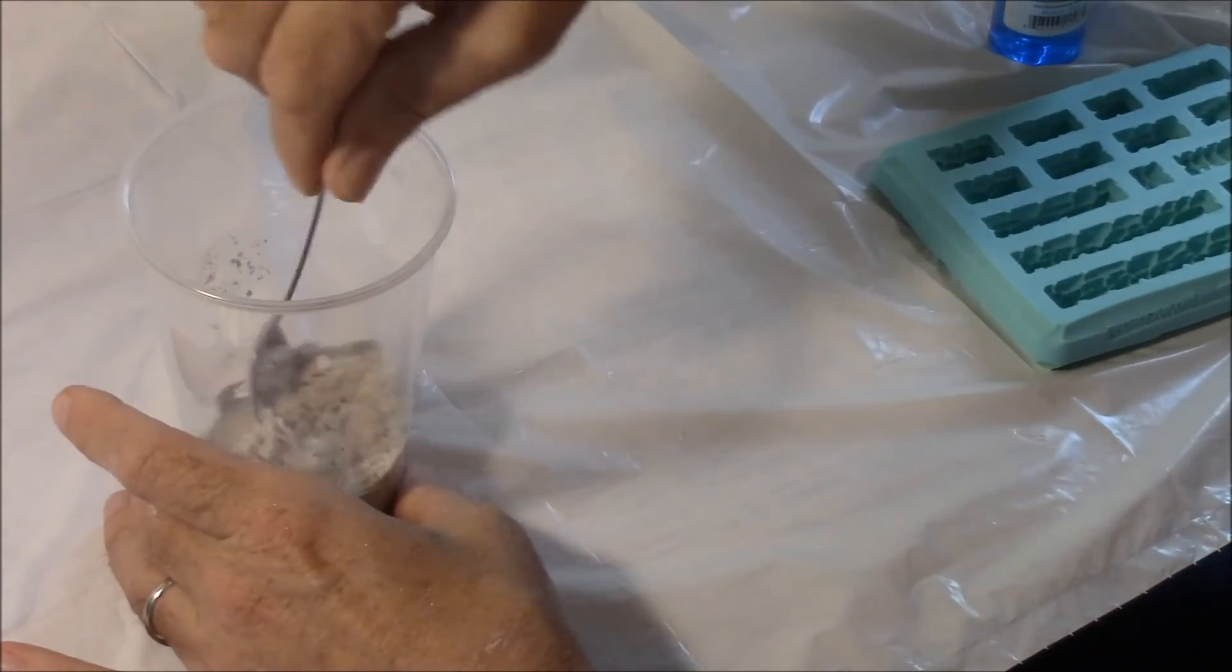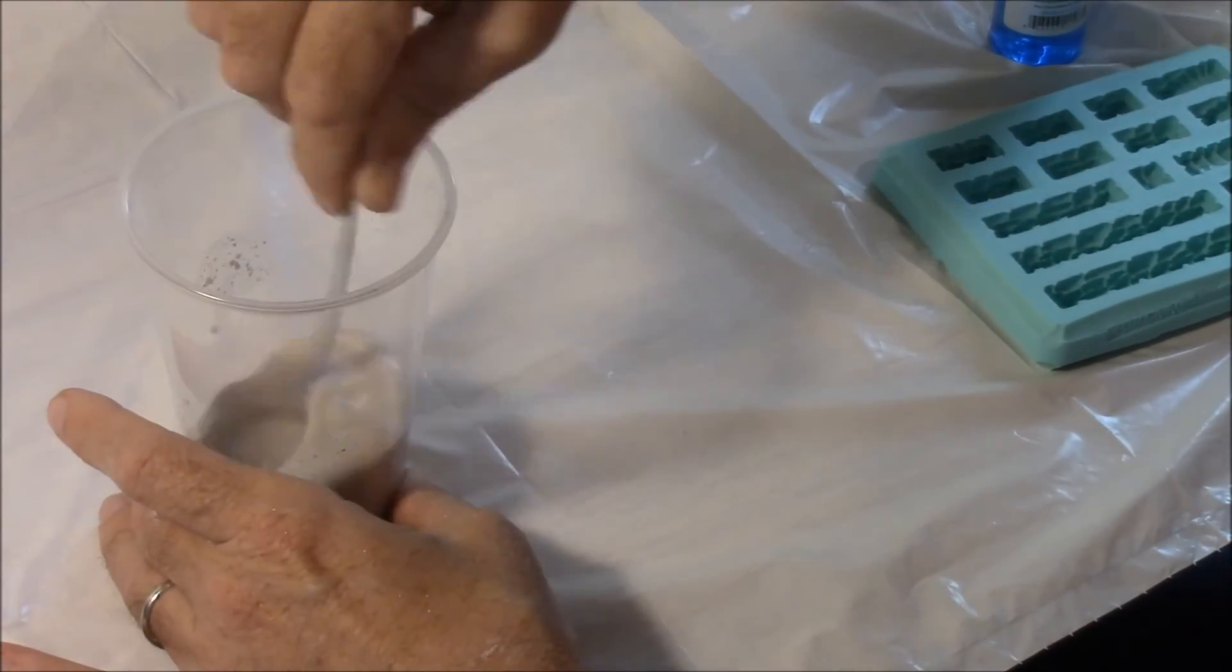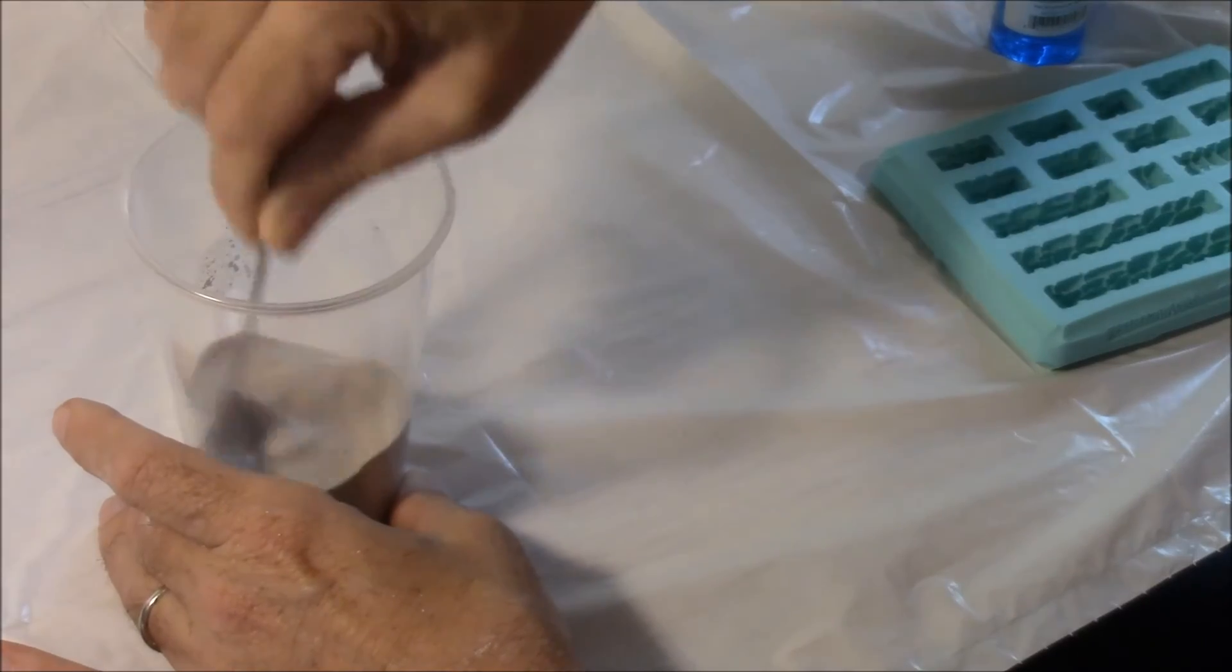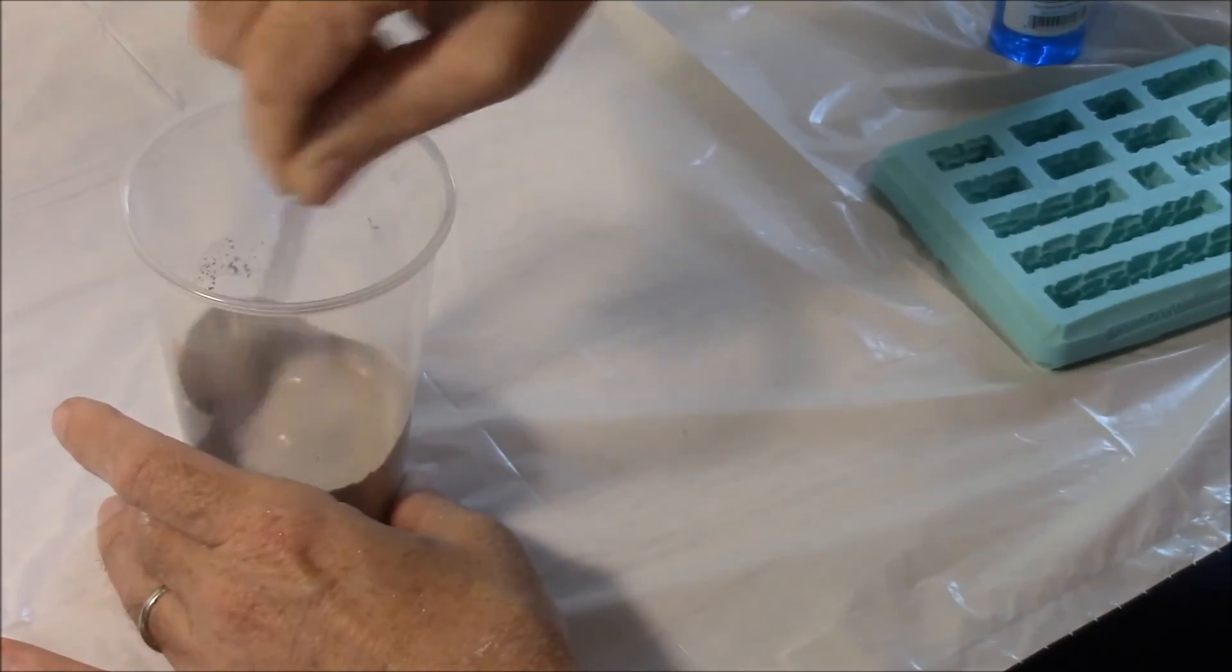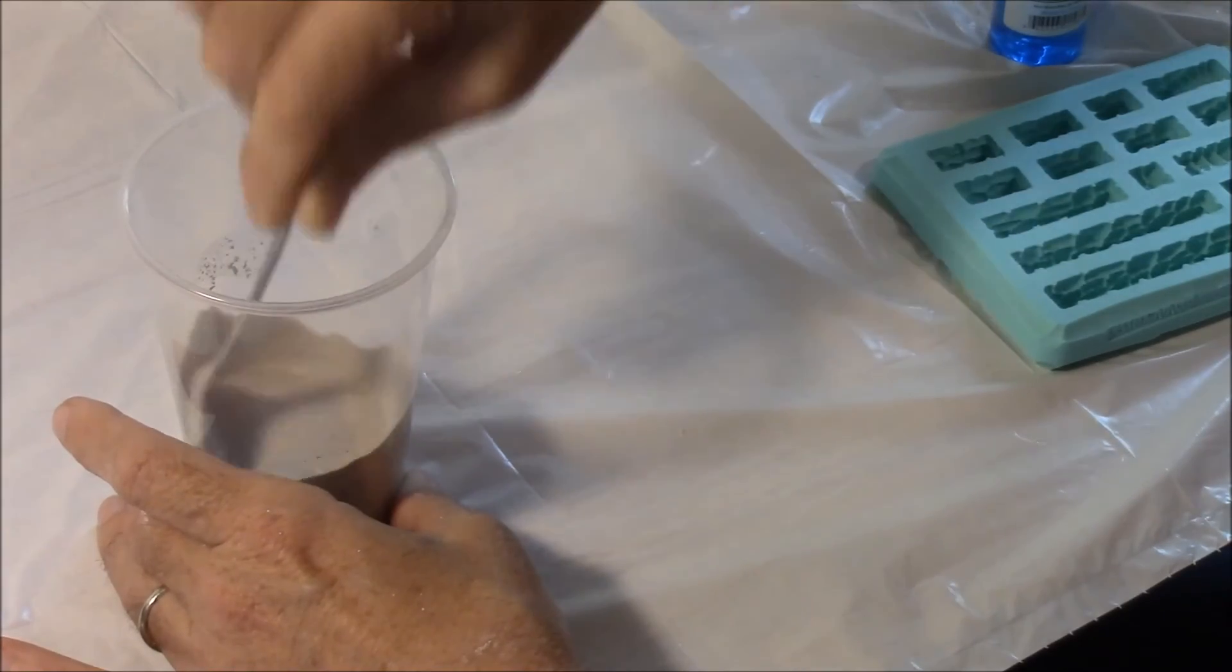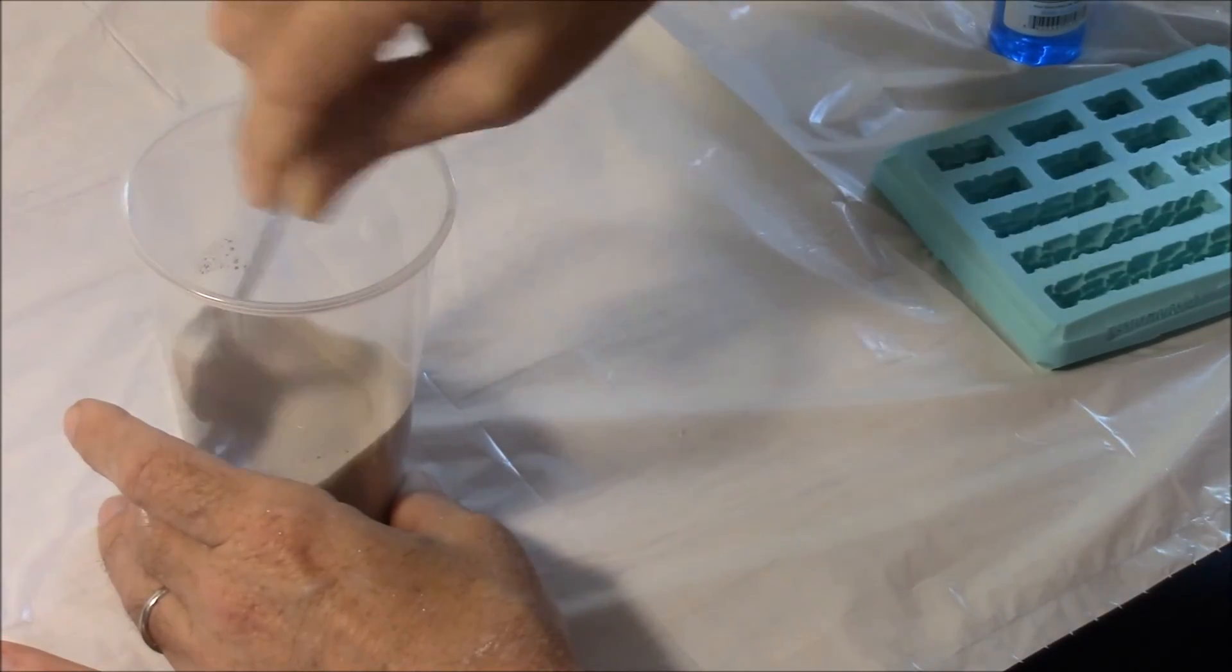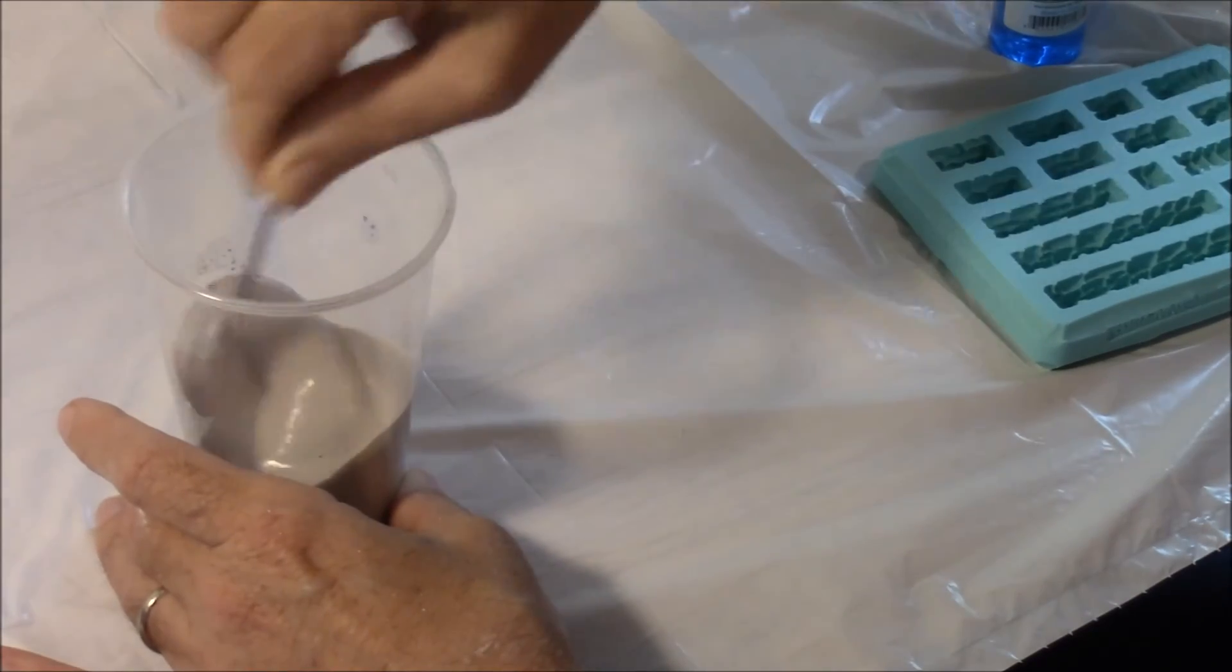So what I'm going to do is take the spoon and I'm going to mix this up. Now this should mix up kind of like a thin milkshake. If it's a really thick milkshake that would be hard to pull through a straw, then you probably won't be able to get it into the mold. But we're going to mix this up to about a thin milkshake.